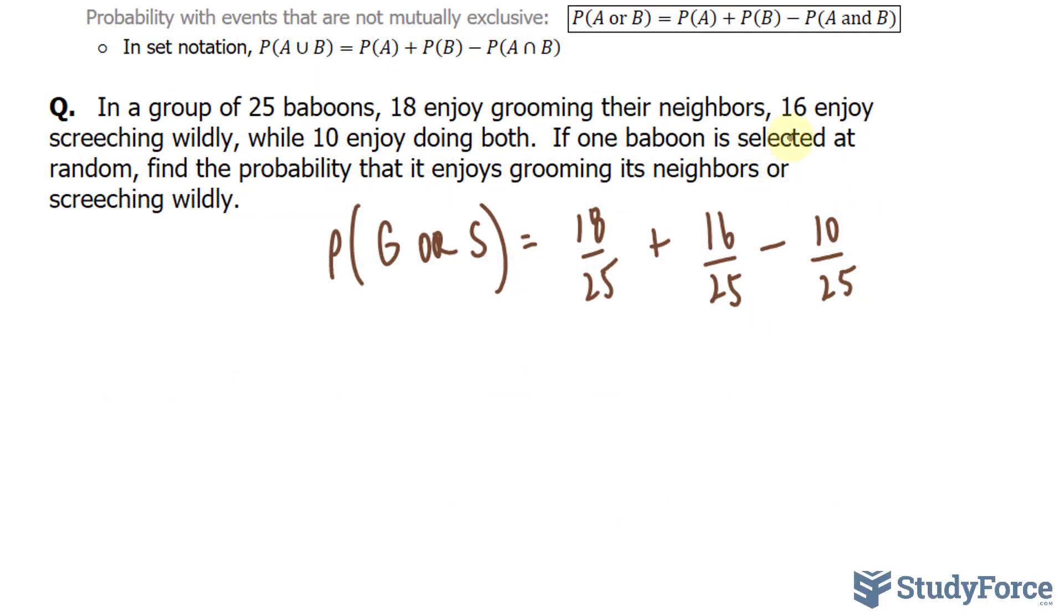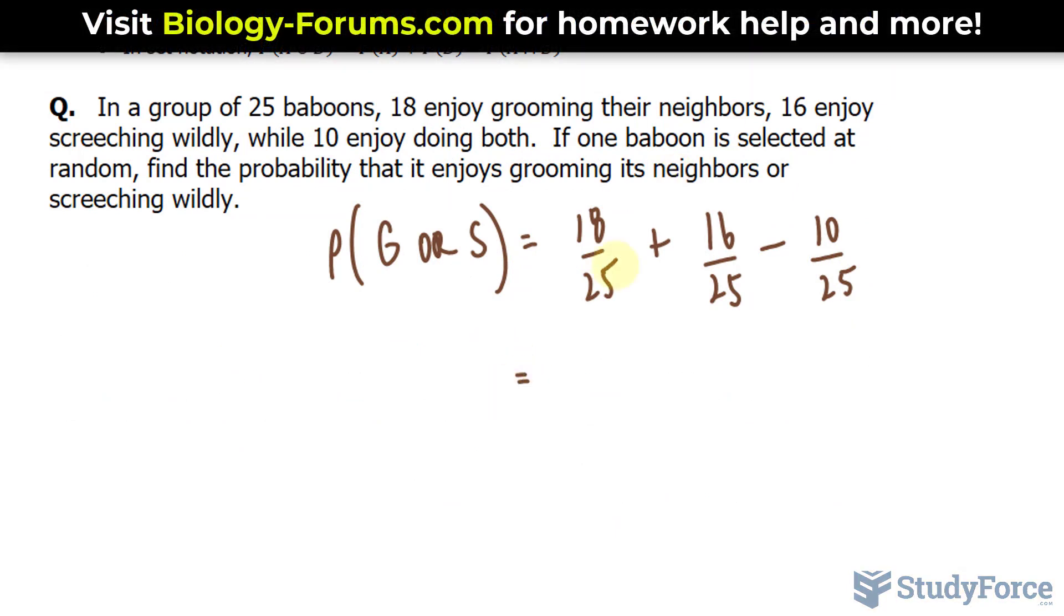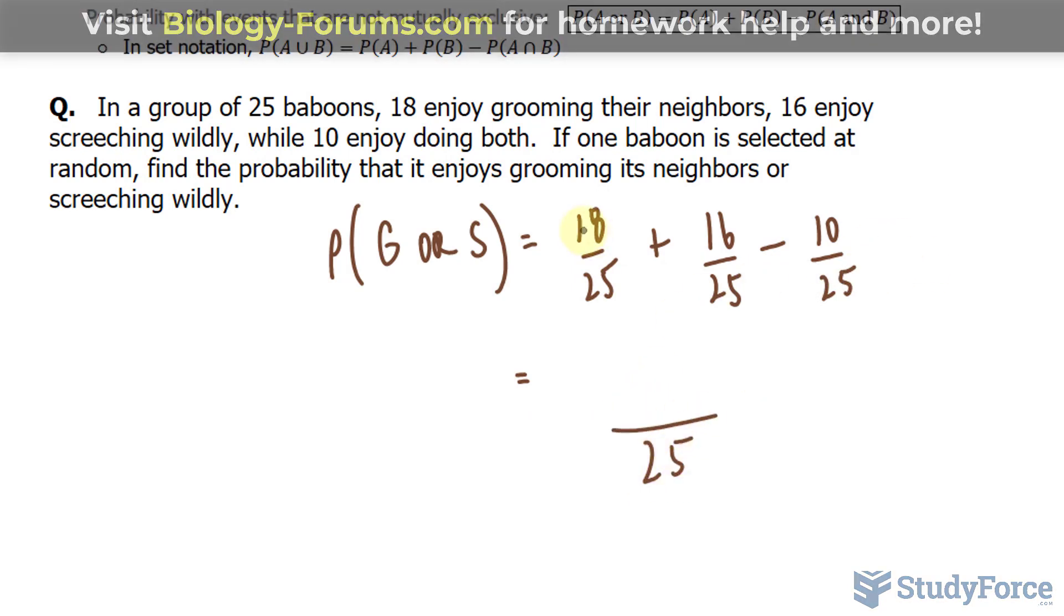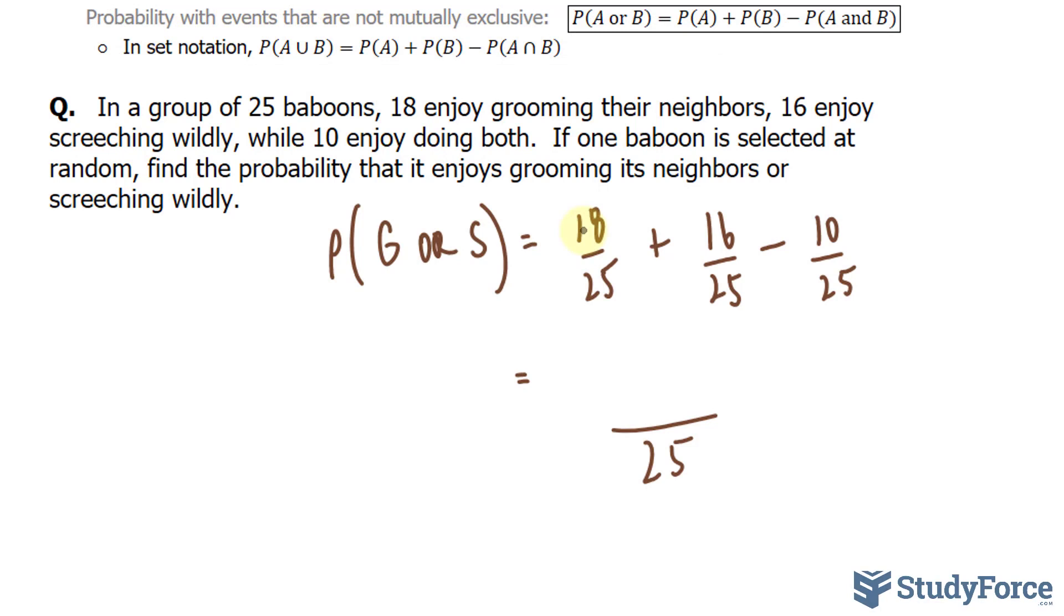And this last fraction refers to this last part. Now adding and subtracting this isn't hard, we have the same denominator all throughout. So that's our common denominator, 18 plus 16 is 34, minus 10 is 24.